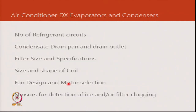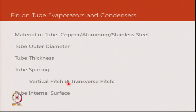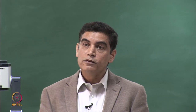The variables we can play with for a fin-on-tube heat exchanger include: material of the fin, fin thickness, fin spacing, fin type, and fin coating. The tube material could be copper, aluminium, or in special cases stainless steel — primarily for corrosion resistance in marine environments or defence applications where robustness is preferred over low cost. We also need to define the vertical and transverse pitch.